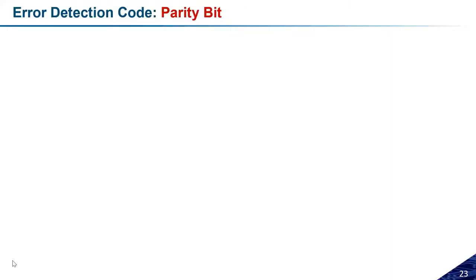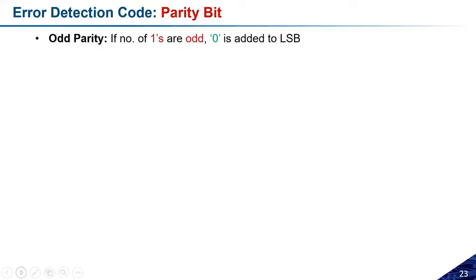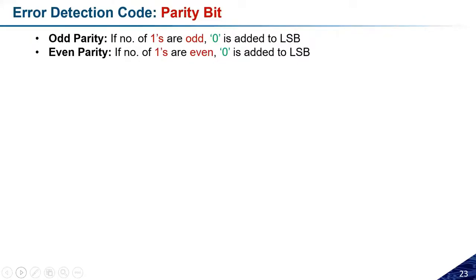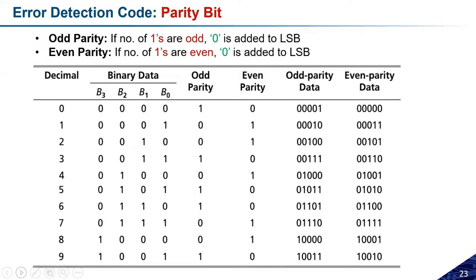Good morning everyone. In the previous class we were discussing about error detection codes and we discussed the parity bit. We talked about two kinds of parity bit: one was the odd parity and the second one was the even parity bit. Based on the type of parity, we decide accordingly how to generate the parity bit, which is added at the LSB of the message and then transmitted.